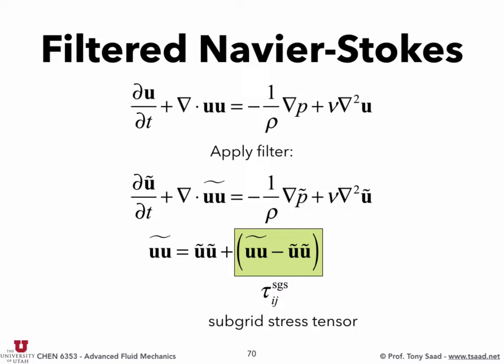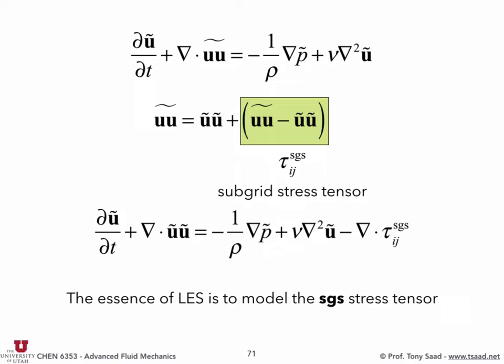Remember there's a divergence on top of this, so we call it tau_ij SGS — the subgrid stress. We write the equation as div-tau for incompressible flows, and then we have a negative div-tau subgrid on the right-hand side. Everything else is expressed in terms of u-tilde. We always assume that this subgrid term is going to look like a stress tensor — it's going to have the effects of a viscous diffusion term — because that's essentially what turbulence does.